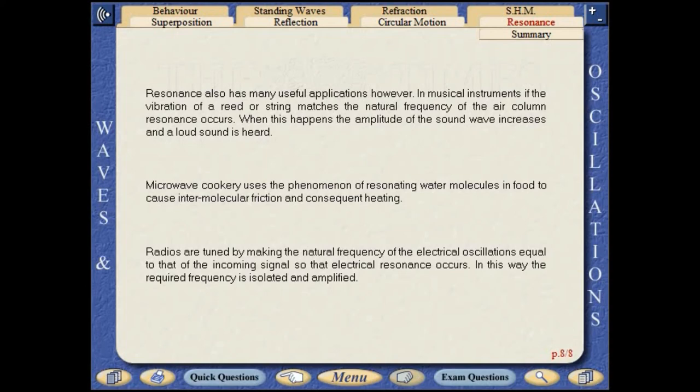Radios are tuned by making the natural frequency of the electrical oscillations equal to that of the incoming signal, so that electrical resonance occurs. In this way, the required frequency is isolated and amplified.